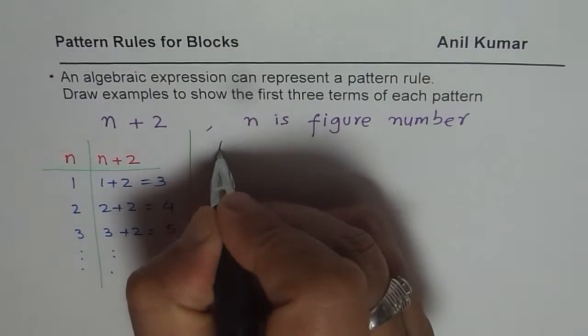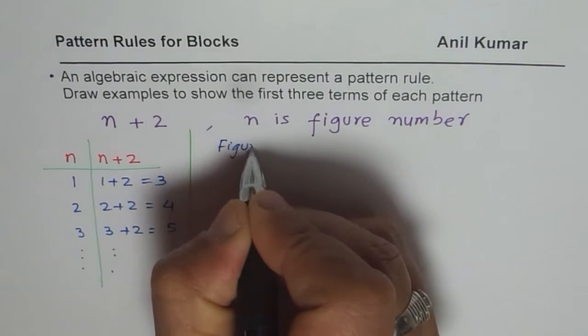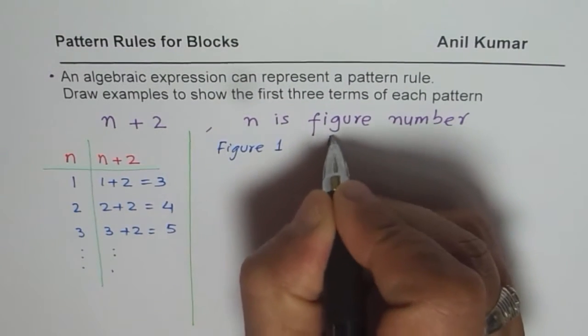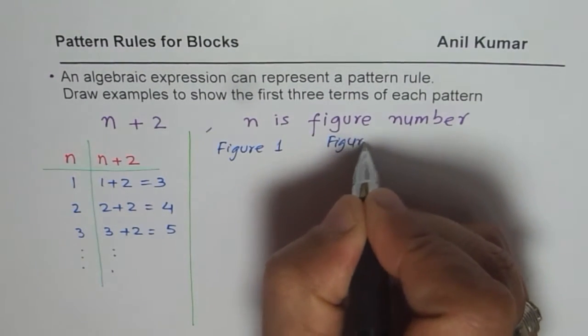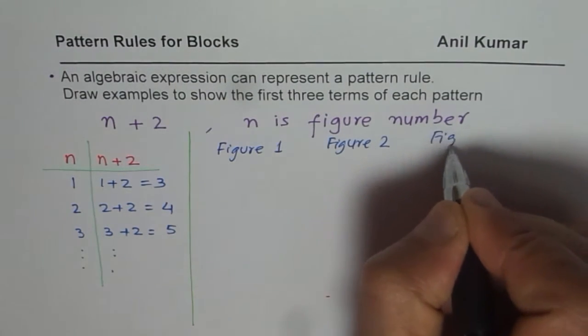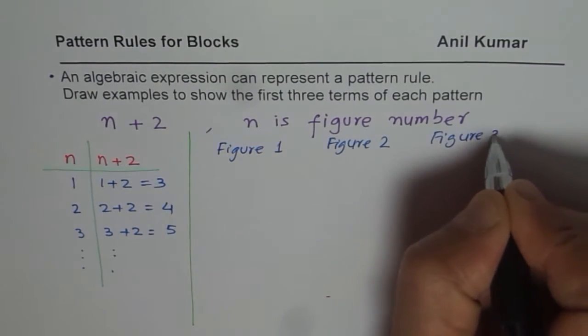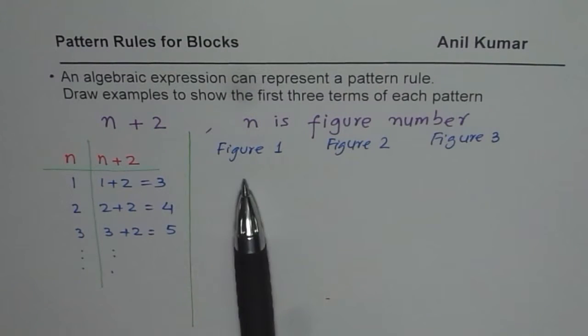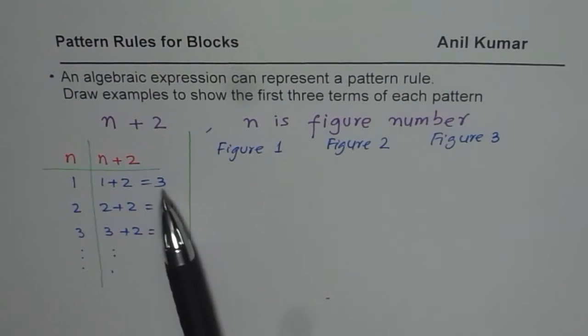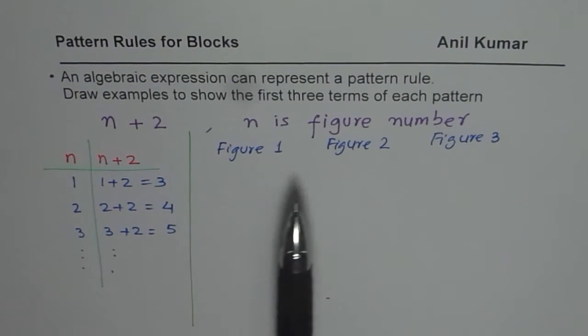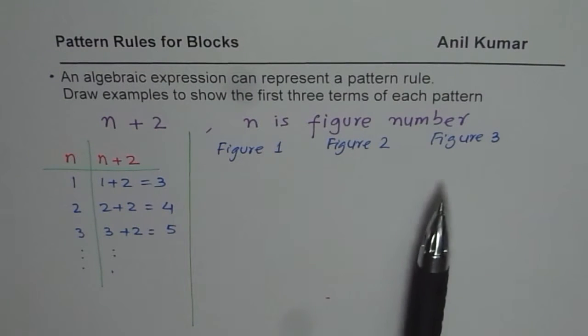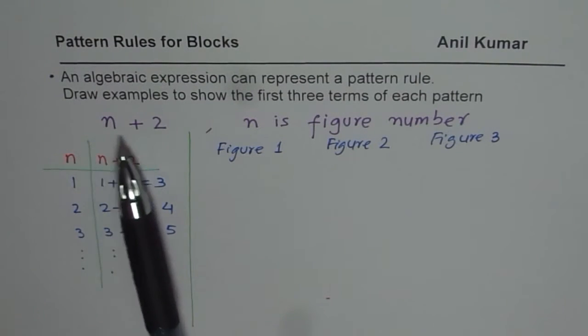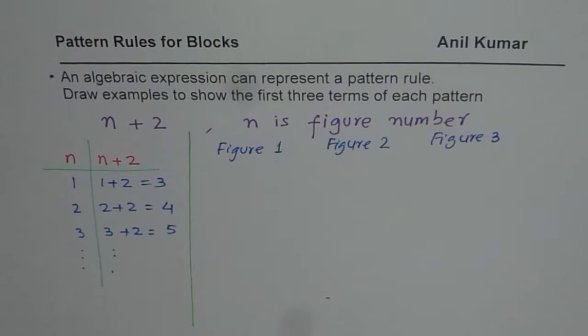Let me now write down here figure numbers. So we will have figure number 1, figure number 2 and figure number 3. So you can take out a paper, copy this and draw a figure where in the first figure we have three blocks, in the second 4, in the third 5 and so on. But the expression n plus 2 should be clear when we read the figure.